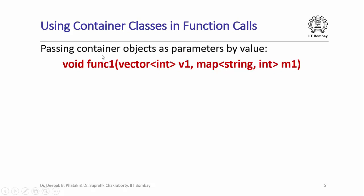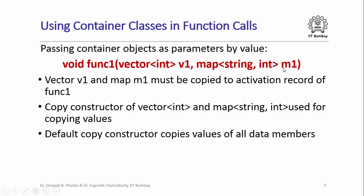What if I wanted to pass container objects as parameters to a function, and specifically wanted to pass these parameters by value? Here is an example of a function, func1, which takes two parameters, v1 and m1. v1 is a container object — a vector of integers. m1 is also a container object — a map with key type string and value type int. Since these two parameters are being passed by value, the vector v1 and the map m1 are going to be copied to the activation record of func1 when func1 is invoked.